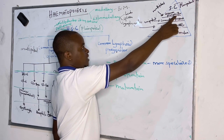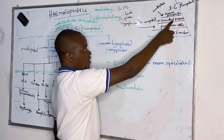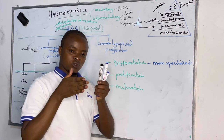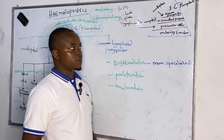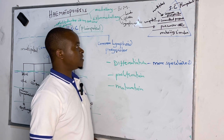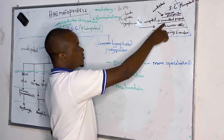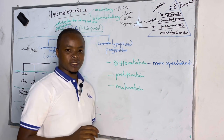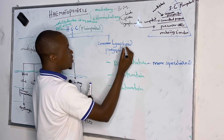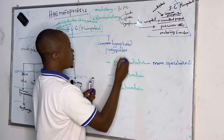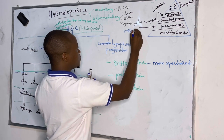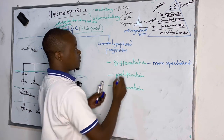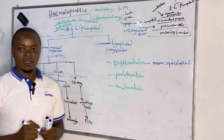The common progenitor is multipotent, meaning it can produce more than one type of cell. From the common progenitor, we get the committed progenitor, also called unipotent. Unipotent means it can produce only one cell type. The unipotent progenitor gives rise to the precursor cells, which are the first to be recognized in the bone marrow.